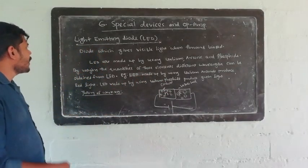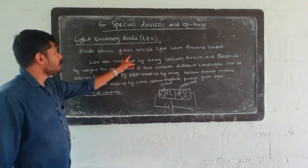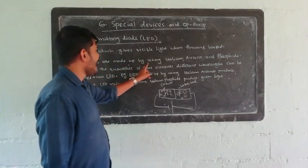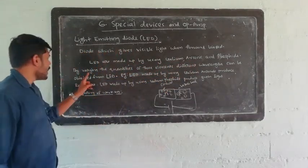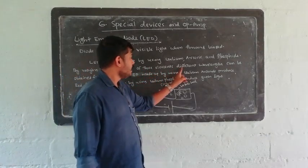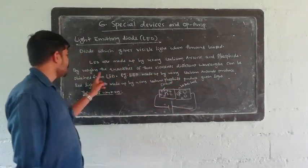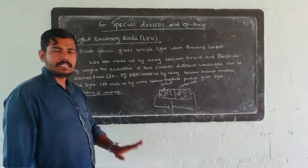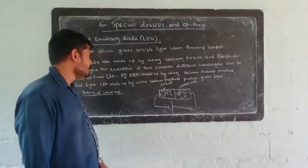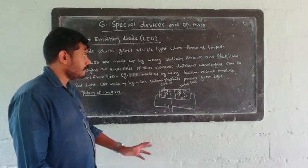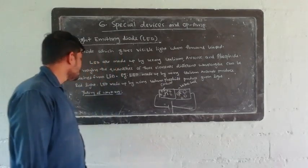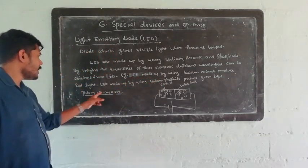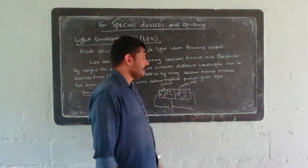Light Emitting Diode: a diode which gives visible light when forward biased. LED is made up by using gallium, arsenic, and phosphide. By varying the quantities of these elements, different wavelengths can be obtained from LED, producing different colors. Note: there is no silicon or germanium used. LED made up using gallium arsenide produces red light; LED made up using gallium phosphide produces green light.